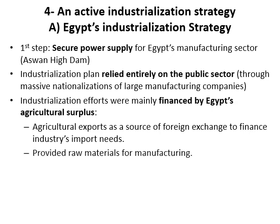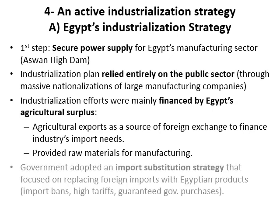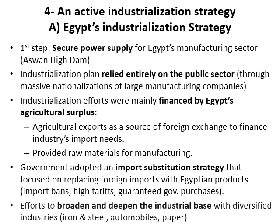The government adopted an import substitution strategy, focusing on replacing foreign imports with Egyptian products, and aimed to build a diversified industrial base with industries such as iron and steel.